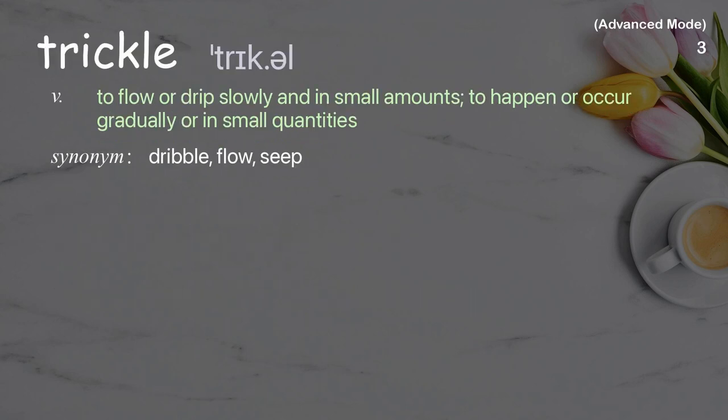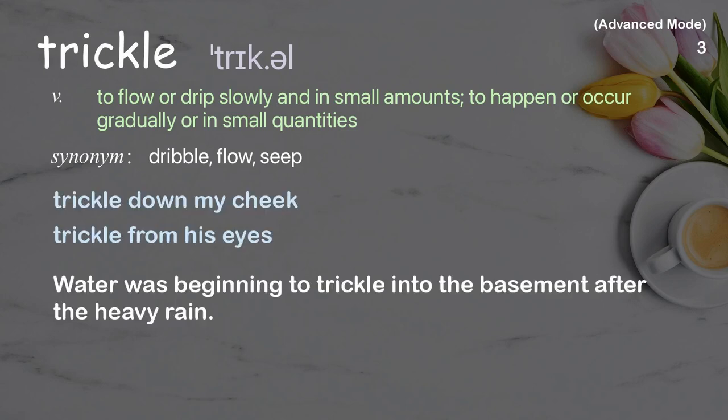Trickle: To flow or drip slowly and in small amounts; to happen or occur gradually or in small quantities. Examples: trickle down my cheek, trickle from his eyes. Water was beginning to trickle into the basement after the heavy rain.